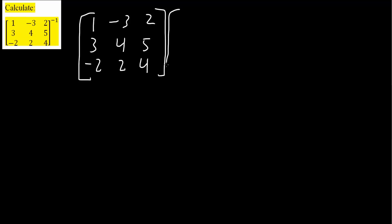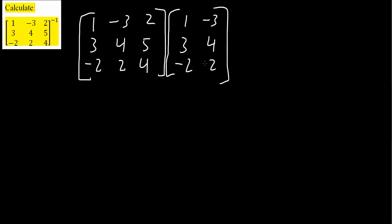Next, we will add another matrix. This matrix will just have the first two columns, meaning 1, 3, negative 2, and negative 3, 4, 2. What we're doing here is calculating the determinant for a 3x3 matrix. Now what we need to do is multiply the diagonals — this diagonal will be multiplied, this diagonal, and this diagonal.